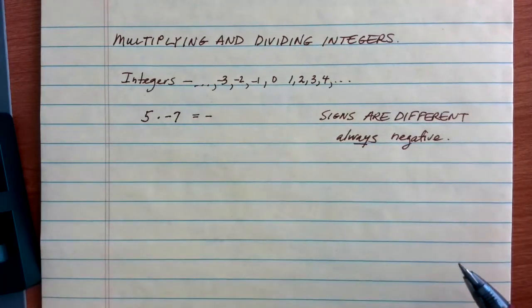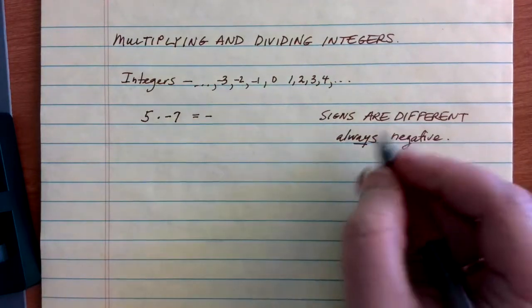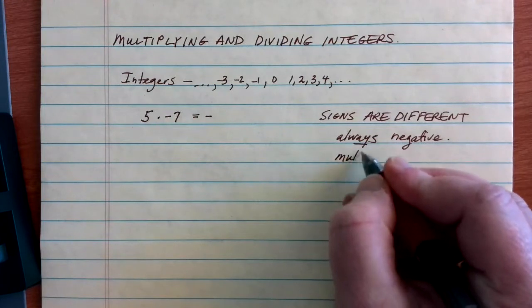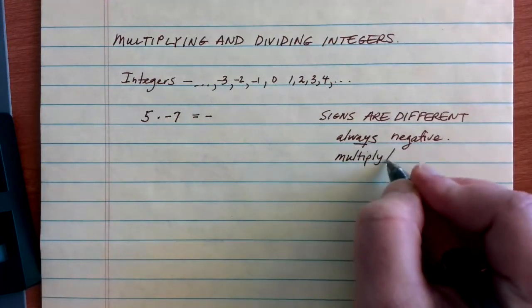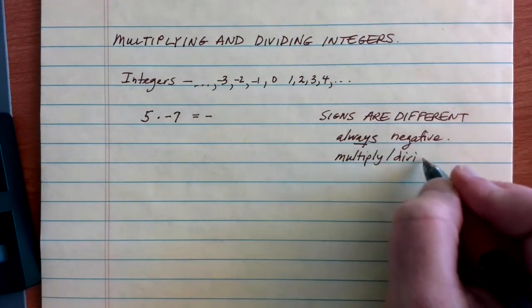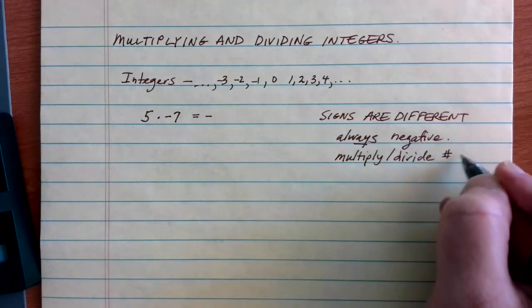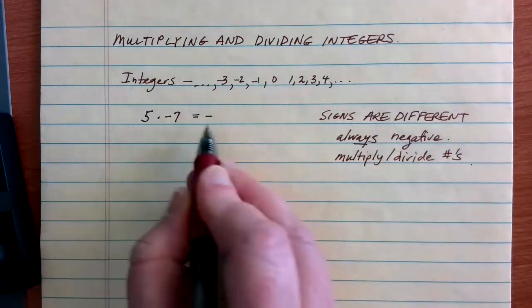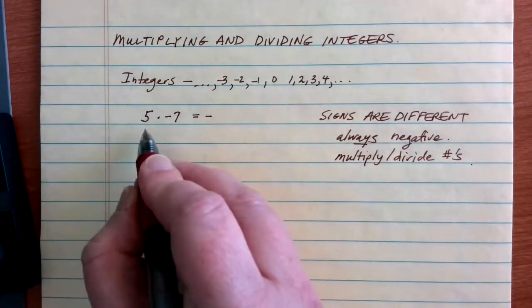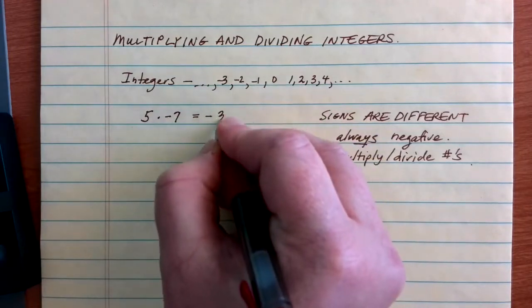Once you've figured out whether your value is positive or negative, then we just multiply or divide depending on what kind of problem we were starting with. Multiply or divide the numbers just like you normally would. So, 5 times 7 is 35, so 5 times negative 7 is negative 35.